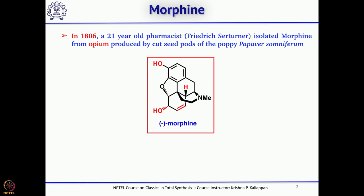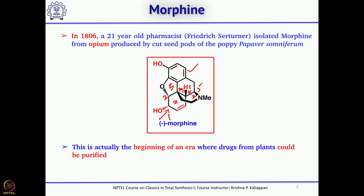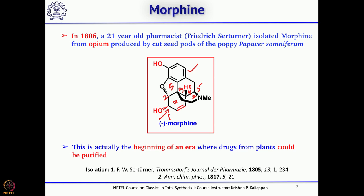If you look at this molecule it is a pentacyclic structure — an aromatic ring having a phenol form, three 6-membered rings, and a dihydrofuran ring. You can see 5 contiguous chiral centers in this molecule, and since then there are many natural products which were isolated in pure form from naturally occurring sources.